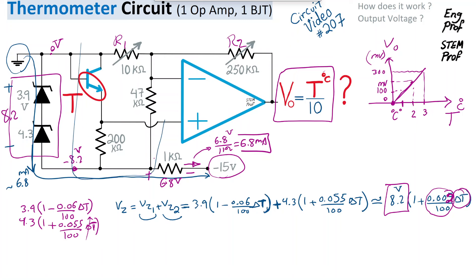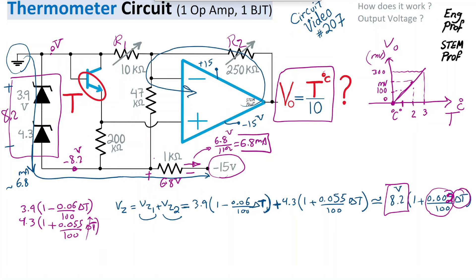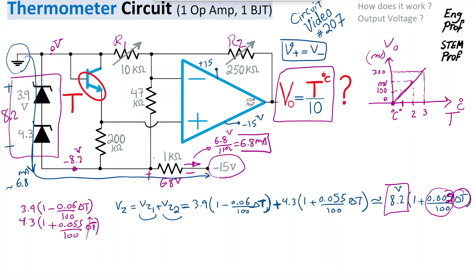The op amp must be properly biased with its required supply voltages — for example ±15V. The output of the op amp is connected via the inverting terminal through potentiometer R2, so negative feedback is present and the circuit is in a stable form with the op amp in its linear region. Therefore, virtual short is valid: the voltage at the positive terminal equals the voltage at the negative terminal in steady state.